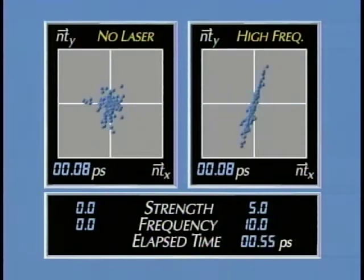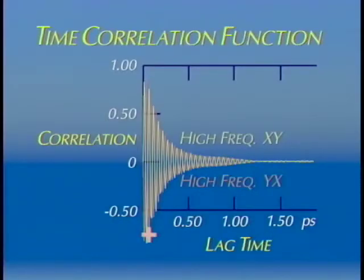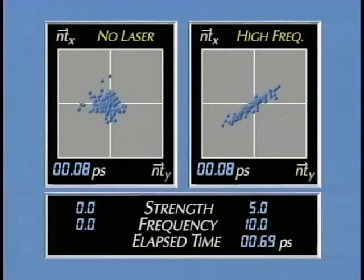Only random motion is seen in the null-laser condition, while a dramatic rotational effect is visible when the ensemble is subjected to a high-frequency circularly polarized laser. When we plot the x component eight time steps later than the y component, the scattergram rotates in the opposite direction, since the time correlation function for x lags y is 180 degrees out of phase with the function for y lags x.